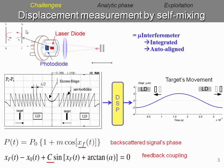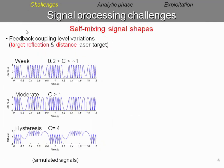This second equation describes the backscattered signal phase related to the feedback coupling factor, which is the main responsible for the different signal shapes.